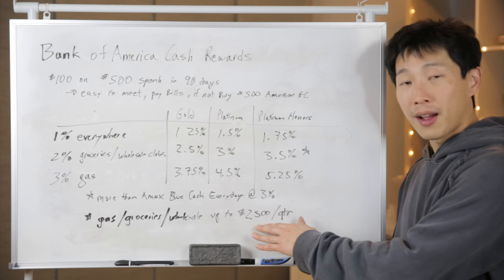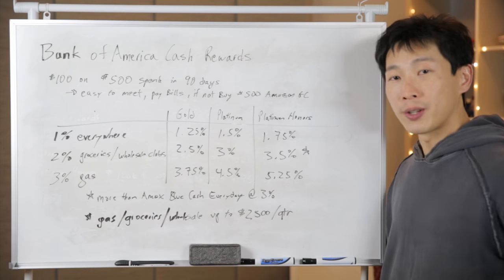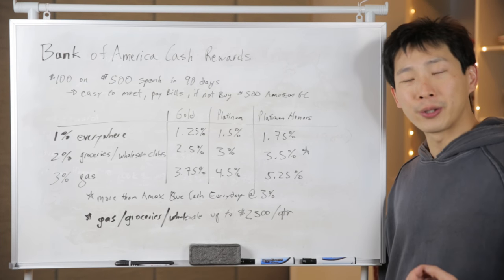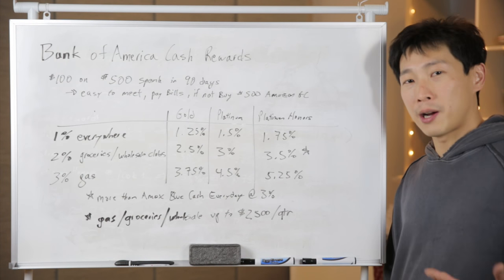Lastly to note is that there's a $2,500 cap per quarter on these gas, groceries and wholesale categories, which means it's about $833 per month. It's a comfortable limit depending on how much you spend.